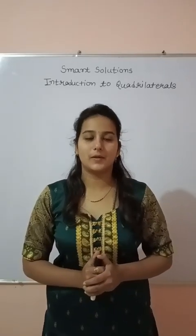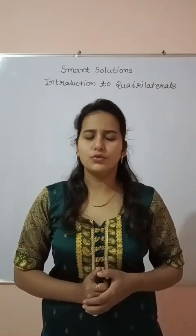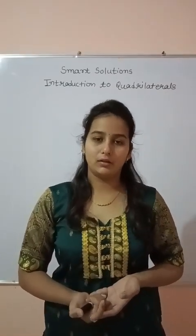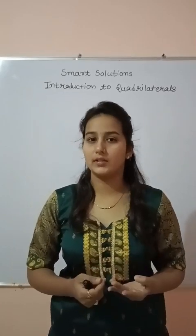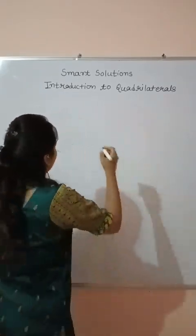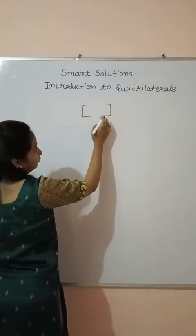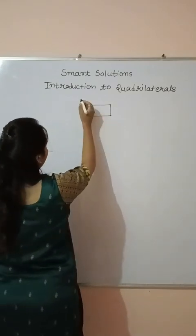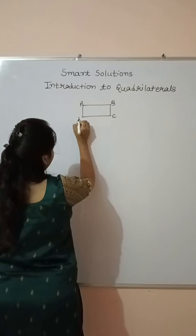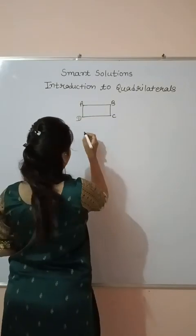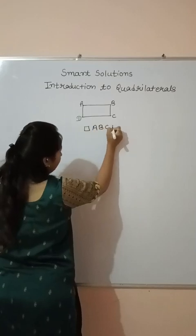Hello friends, welcome to my channel Smart Solutions. Today we will learn about the quadrilateral. So first, what is a quadrilateral? Any diagram or any shape which is made up of four sides is known as the quadrilateral. For example, suppose these are the four sides — one, two, three, and four — and we will name this diagram A, B, C, D. So we write the name of the quadrilateral like this: quadrilateral ABCD.